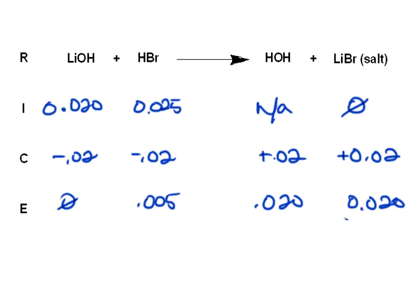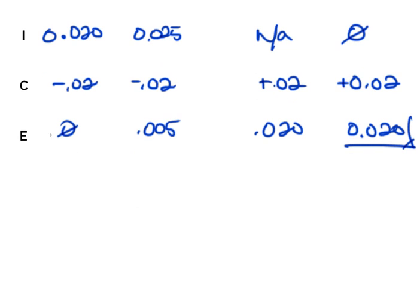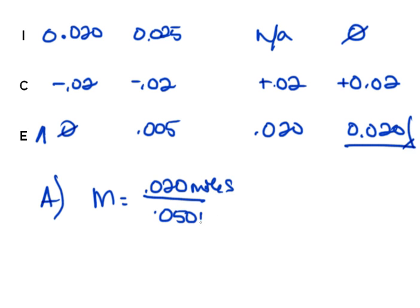And so this is how many moles of lithium bromide are formed. We needed to find molarity for part A. So we just take the moles that we found to be our theoretical yield and divide by our volume that was originally given to us. We find that you have 0.40 molar lithium bromide, and that's the answer for part A.